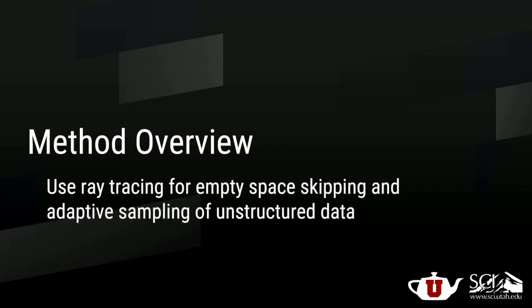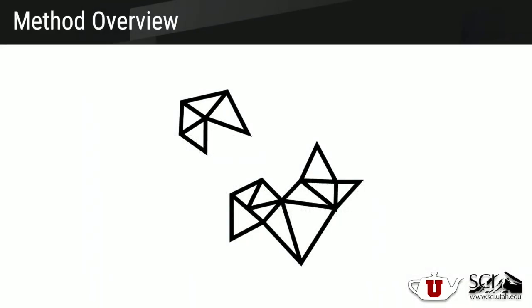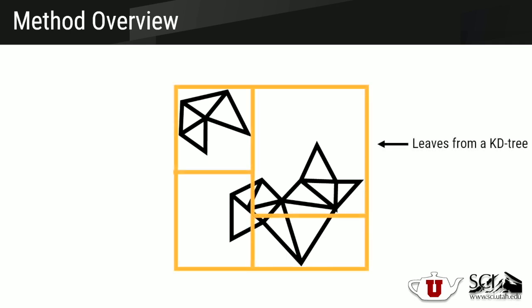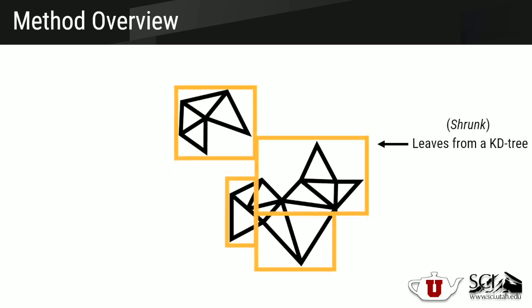In this work we propose a method which uses ray tracing to implement both empty space skipping and adaptive sampling to work on unstructured data without introducing significant overhead. Given an unstructured mesh, we build a KD tree over the mesh elements to partition them into a set of convex disjoint regions. For each region we compute the minimum and maximum of the scalar field and the corresponding transfer function maximum opacity and color variance.